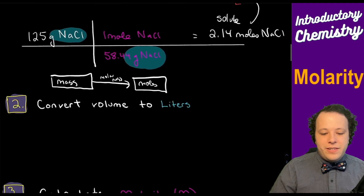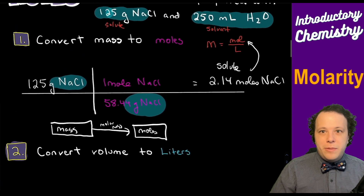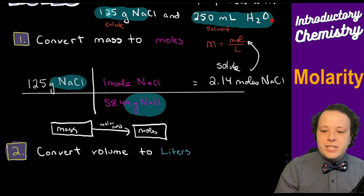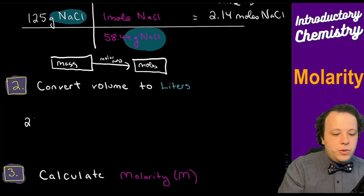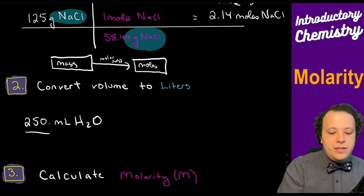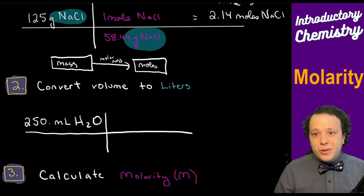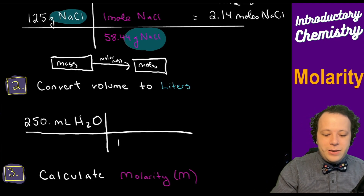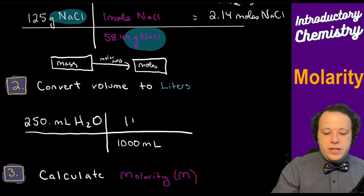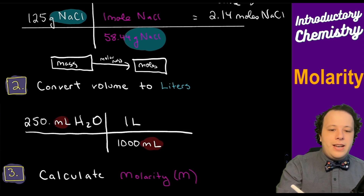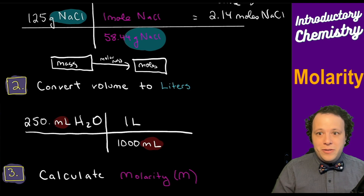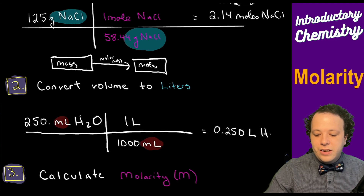Before we can plug that in, we also have to convert volume to liters. We started with 250 milliliters of water, so going back to dimensional analysis: 1,000 milliliters equals one liter, milliliters cancel, leaving us 0.250 liters of water.